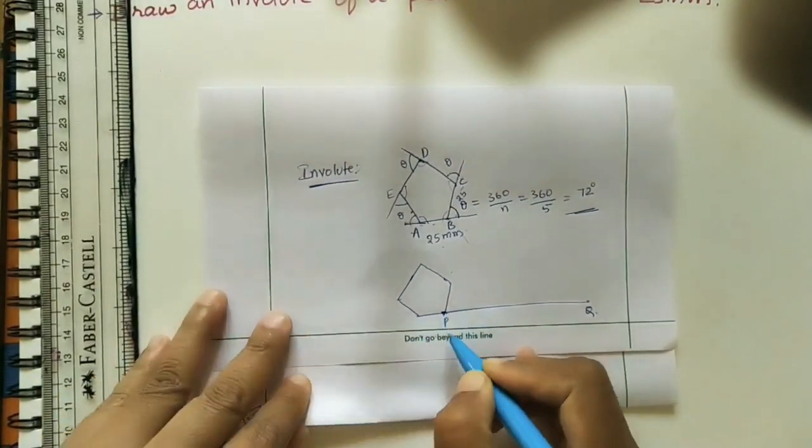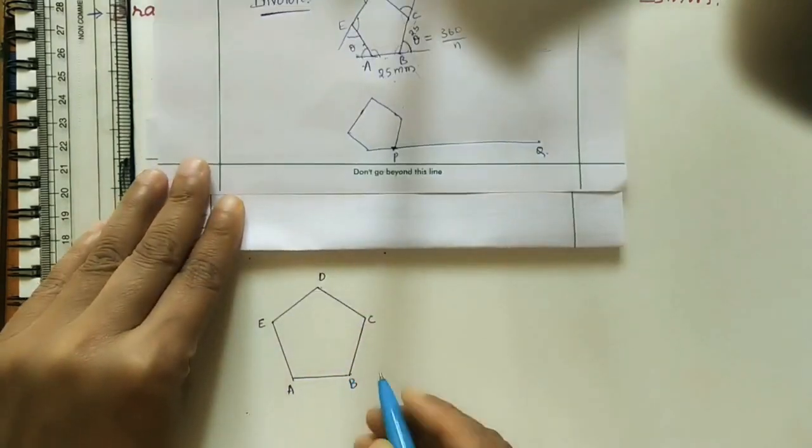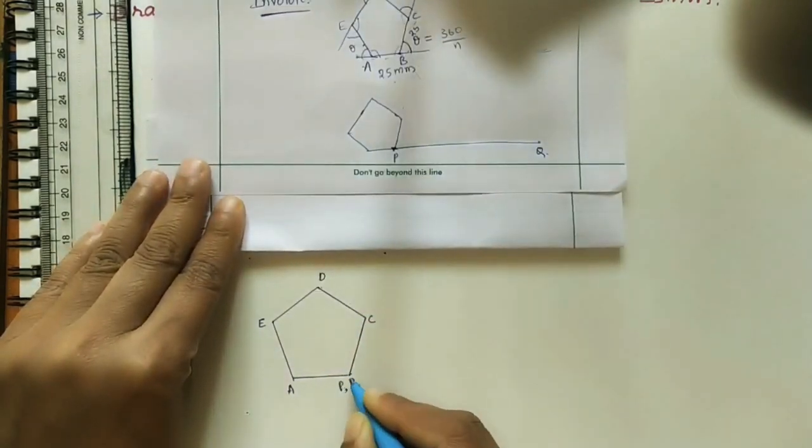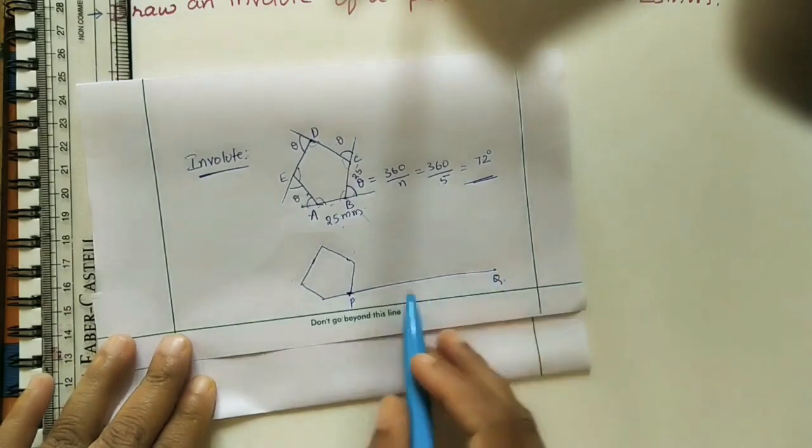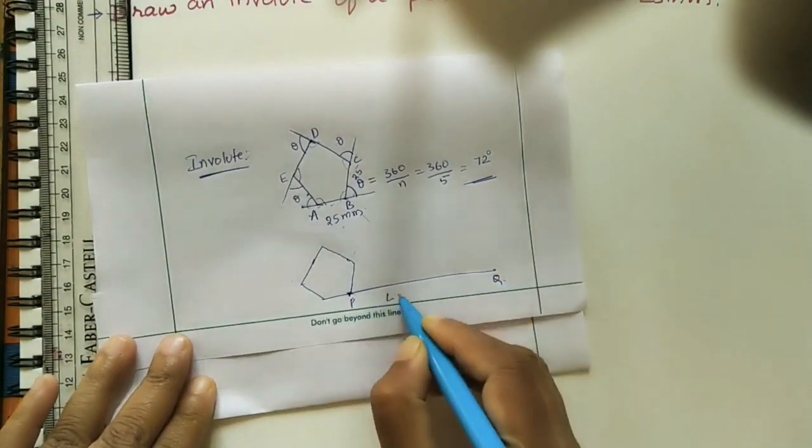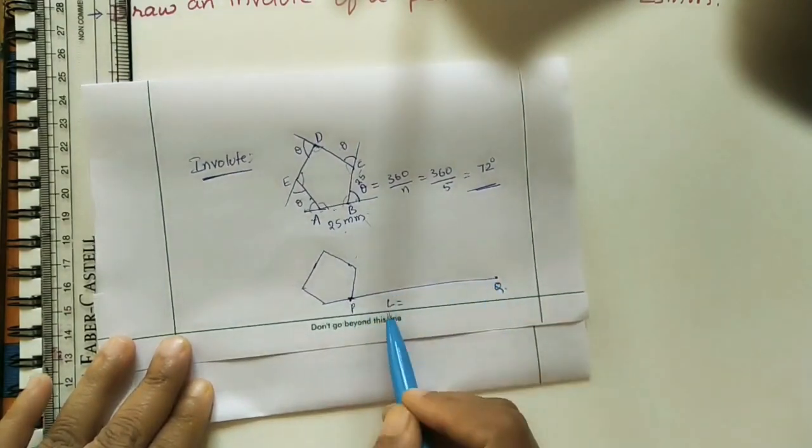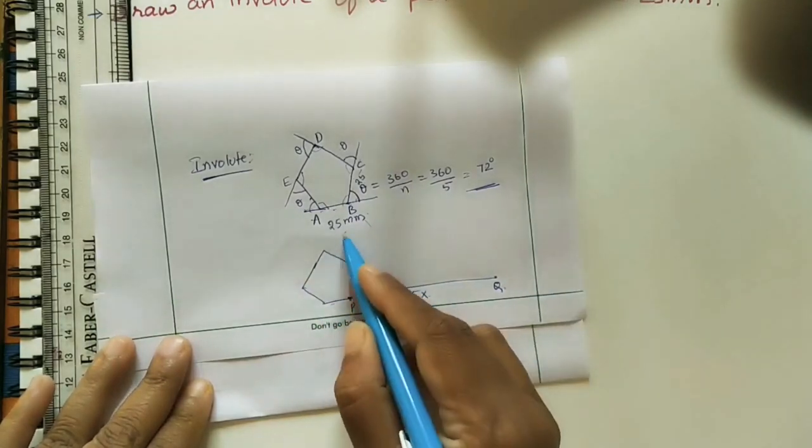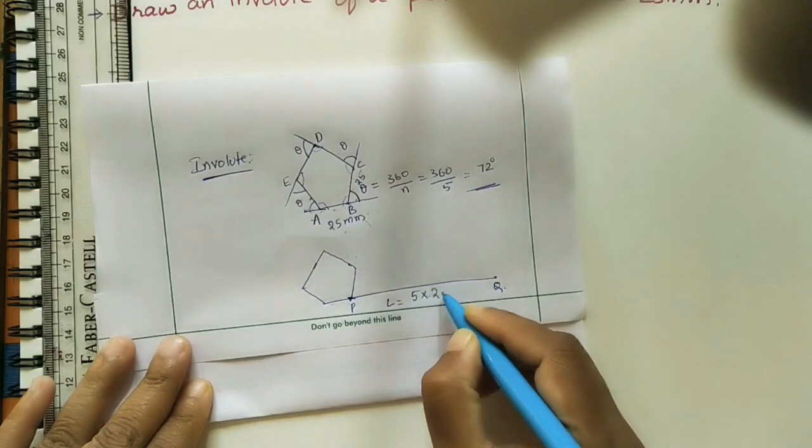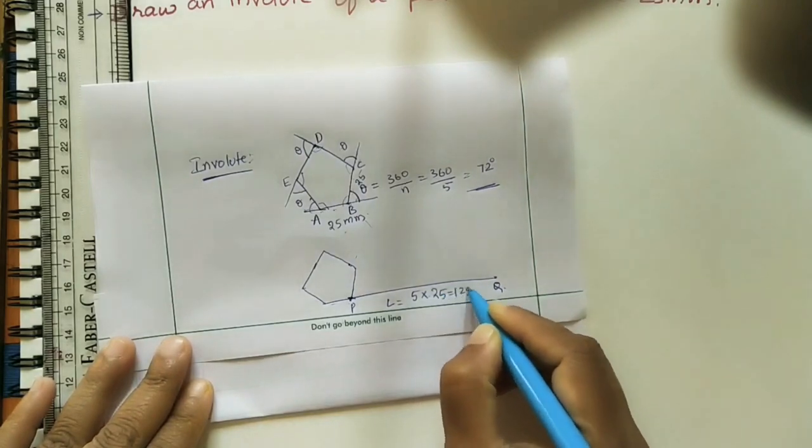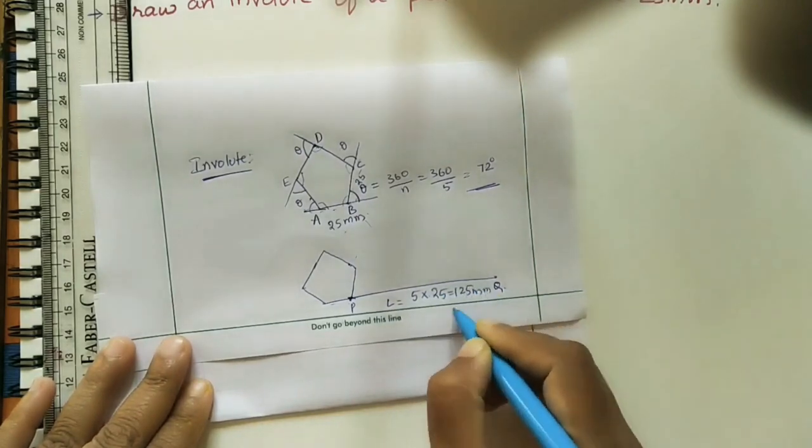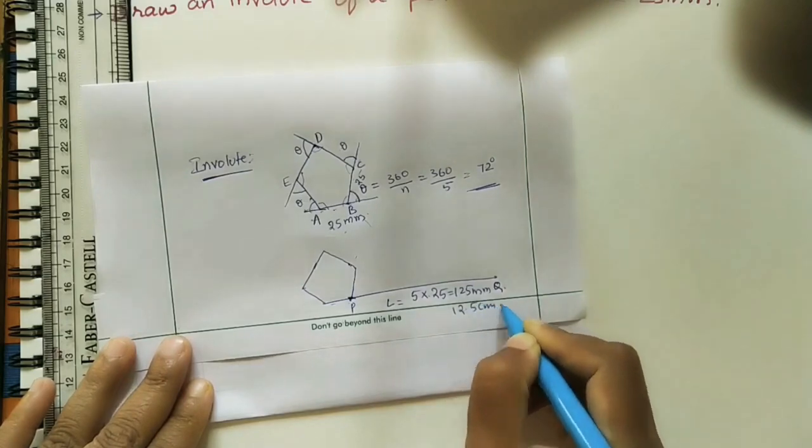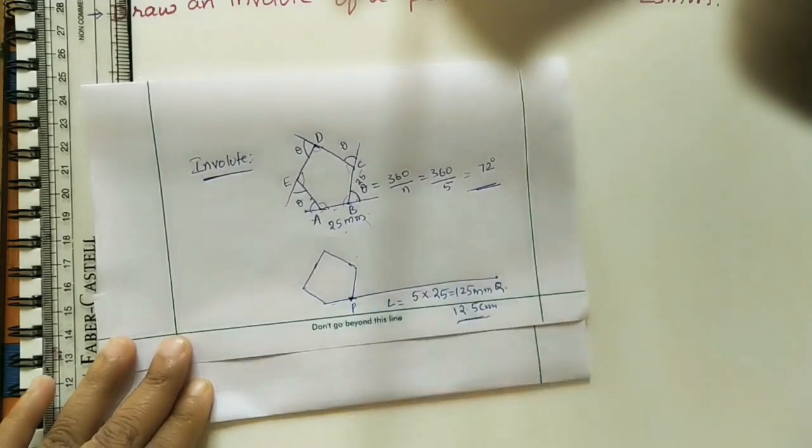After doing the pentagon do one line. Mark P point initial point, it is at the B point. P and B at the same point. Do PQ line. This line length is L, where L equals length of the PQ is 5 sides of the polygon into side length of the polygon 25. It is 125mm, that is 12.5cm. So PQ length is 12.5cm.